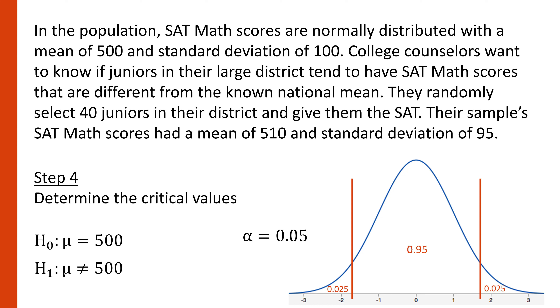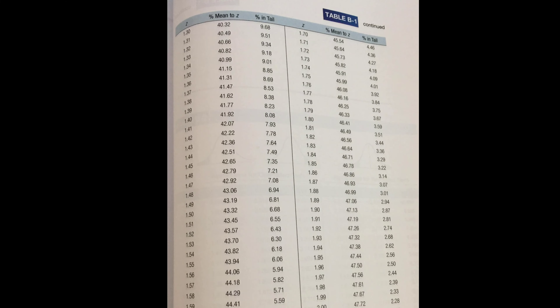You have two options: you could use the z-table in the back of your textbook, or you can use StatKey. Let's start with the z-table and find the row where there is 2.5% in the tail. When the percent in the tail is 2.5%, the z-value is 1.96. Since this is a two-tailed test, the two cutoffs are plus and minus 1.96.